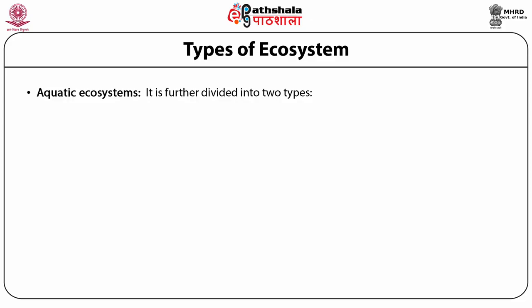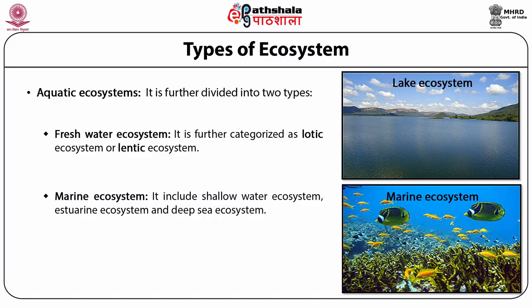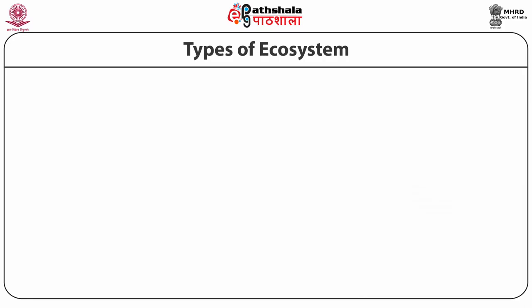Another type of natural ecosystem is the aquatic ecosystem, further divided into two types. The first is freshwater ecosystem, categorized as lotic ecosystem — an ecosystem of running water such as stream or river — and lentic ecosystem, which consists of still water such as lake or pond. Marine ecosystem includes shallow water ecosystem, estuarine ecosystem, and deep sea ecosystem.